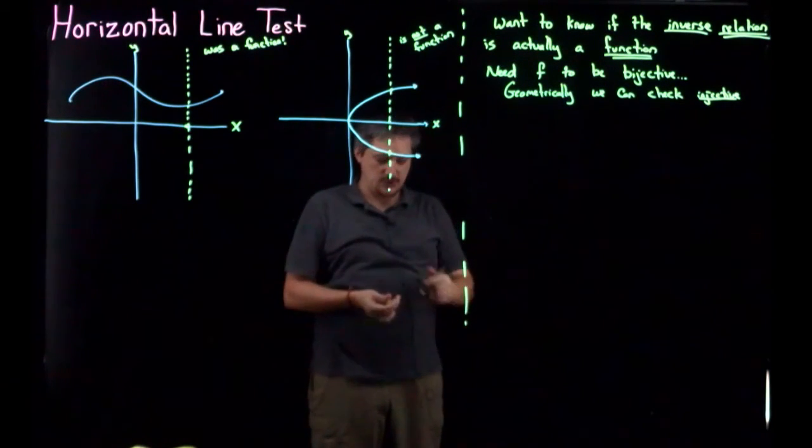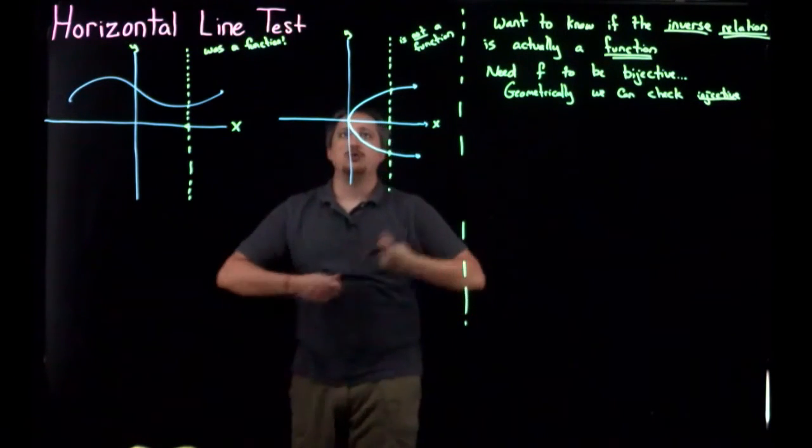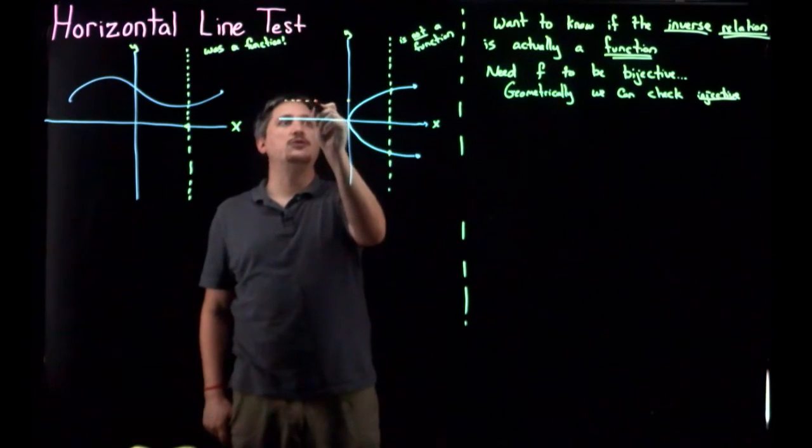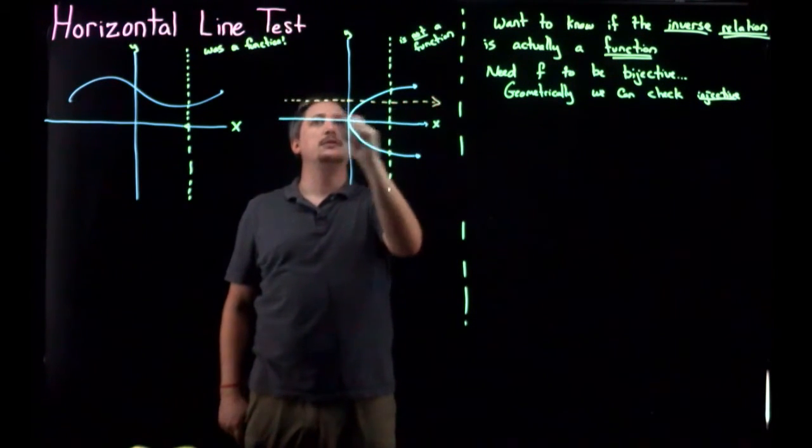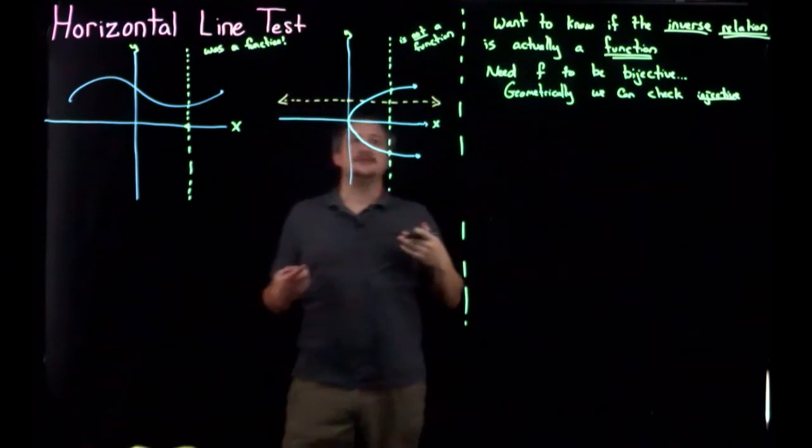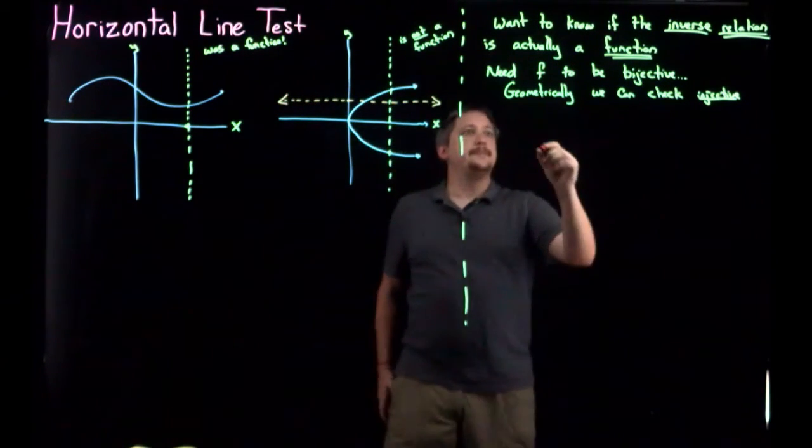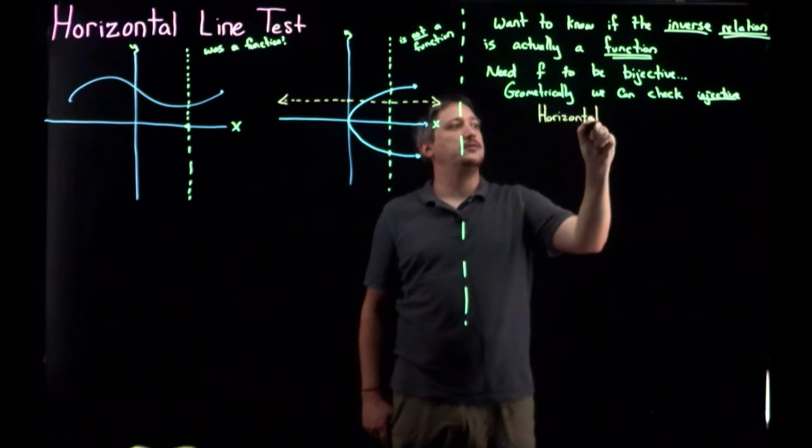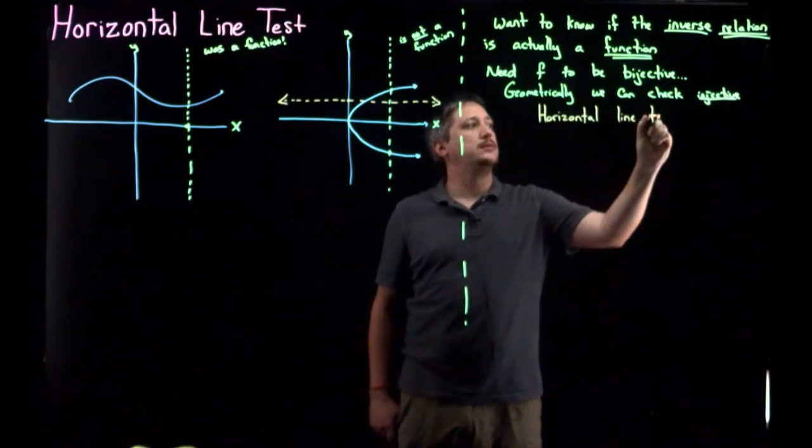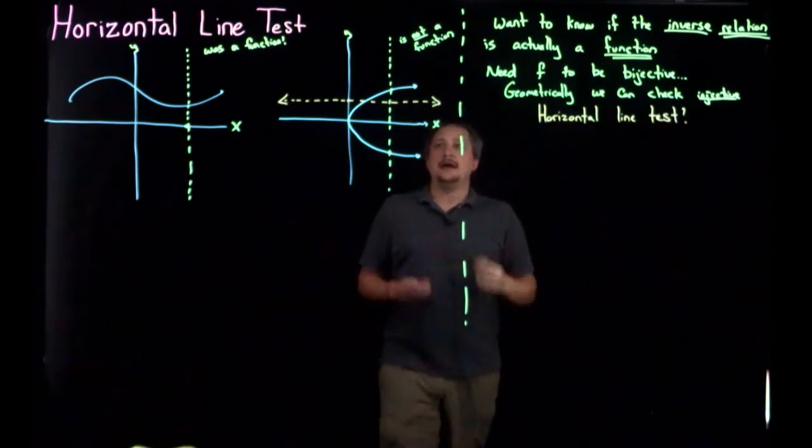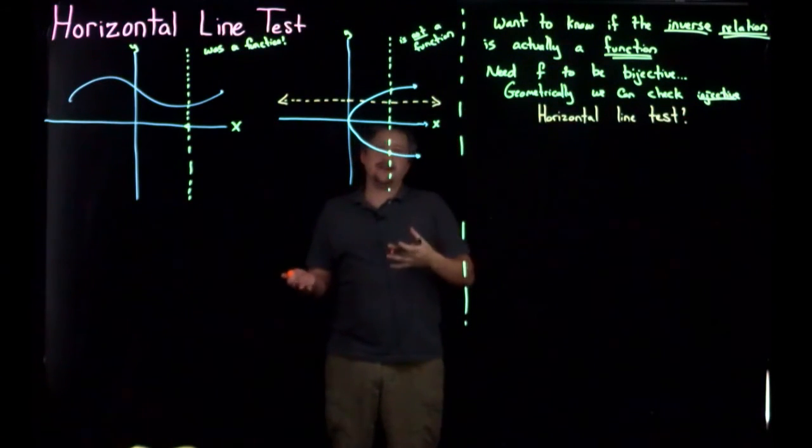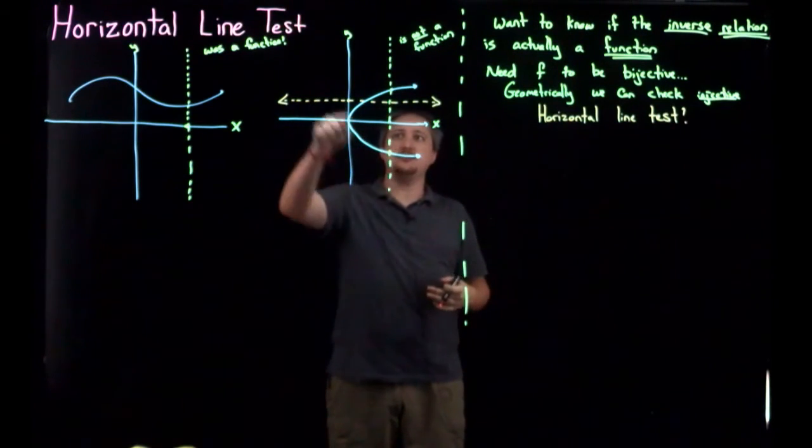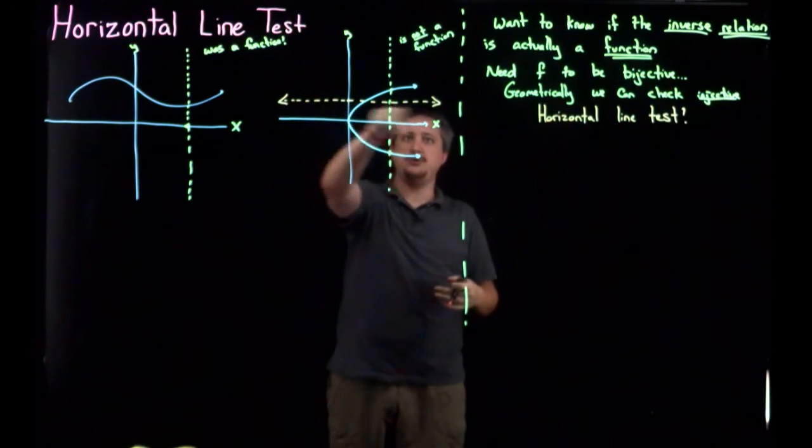Now we want to check each output to see how many inputs it has. And so we're going to do the same general approach, where we're going to fix an output and look at all possible inputs, all the possible x values. And what we get is a horizontal line. So this gives rise to the horizontal line test.